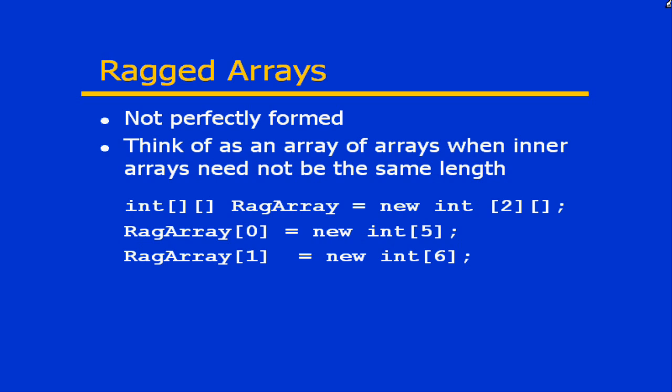So you could have an array that contains other arrays, and those contained arrays may all be of different sizes. The way you create a ragged array, instead of using a comma after the data type identifier, we use open and closed square brackets for every set of arrays we wish to store. In this example, we have a two-dimensional ragged array of integers. When instantiating it, I said new int[2], so the first dimension has two elements, but there's no specific sizing for the second dimension, because each element of the first dimension represents its own array.